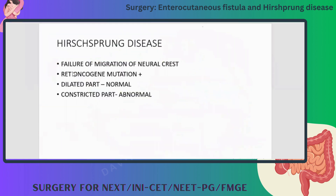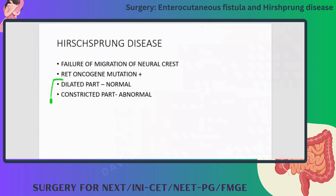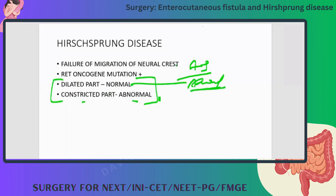Now coming to Hirschsprung's disease. We were also discussing achalasia cardia — in both conditions there is failure of migration of neural crest cells and ganglion cells. The key difference: in Hirschsprung's, the dilated part is normal and the constricted part is abnormal; in achalasia, the dilated part is abnormal and the constricted part is normal.